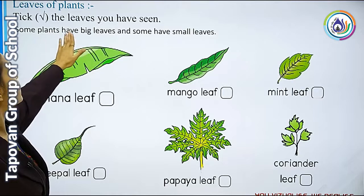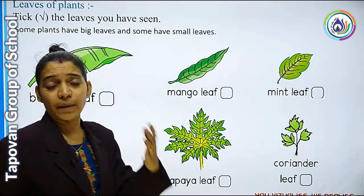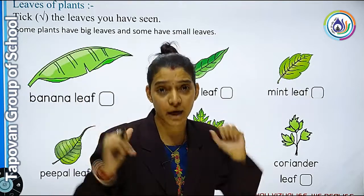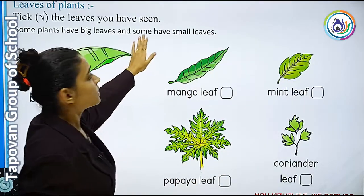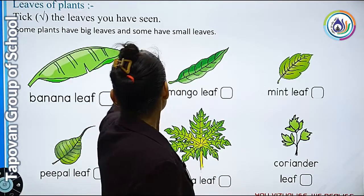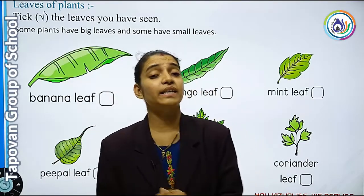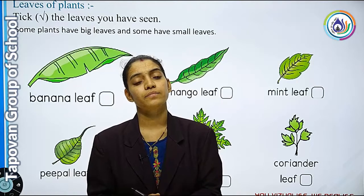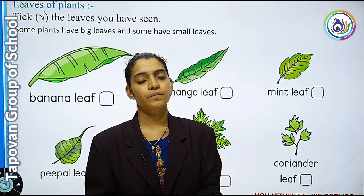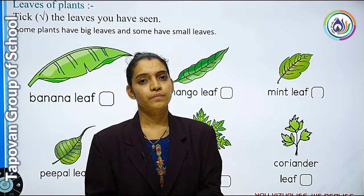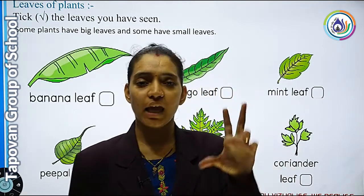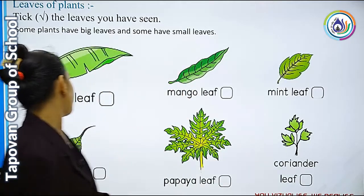Some plants have big leaves — मैंने आपको बताया है न कि कुछ plants को बड़े leaves होते हैं. And some have small leaves — और कुछ कैसे होते हैं? Small, यानि कि छोटे होते हैं.